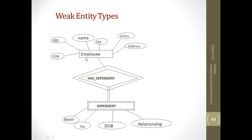To give an example: 'employee' is a strong entity or identifying entity. The identifying relationship is shown in a double rhombus, and from the weak entity set it has total participation. The weak entity set is shown in double rectangles, and 'name' acts as a partial key.